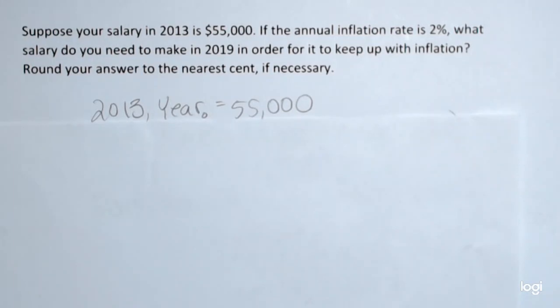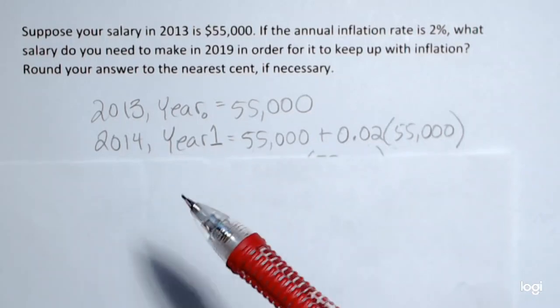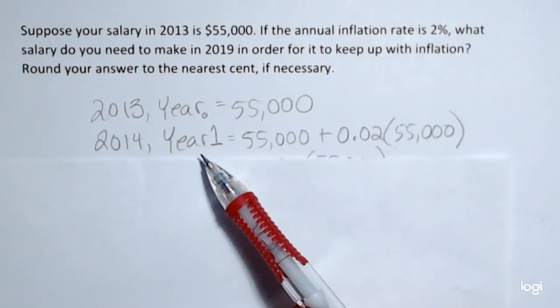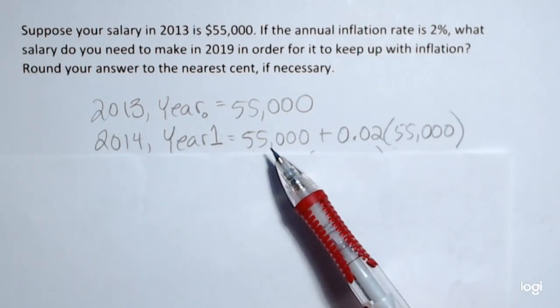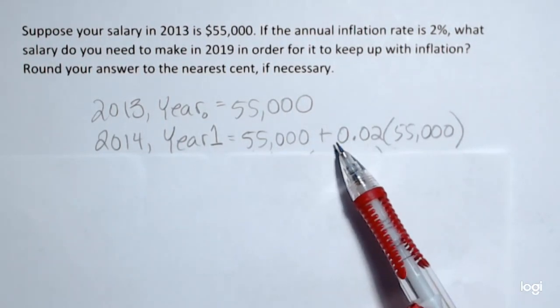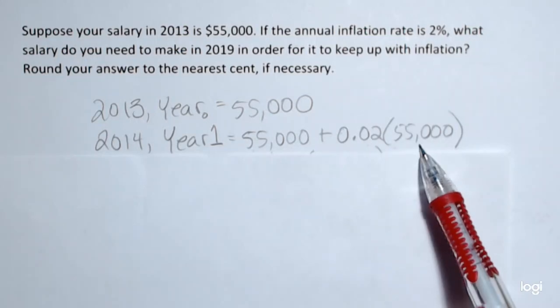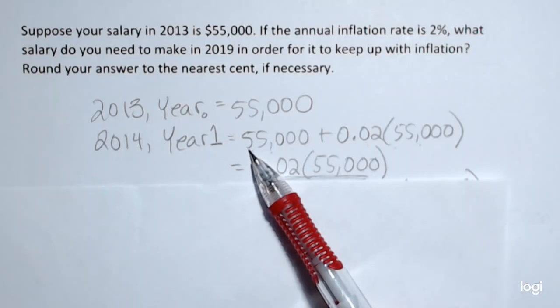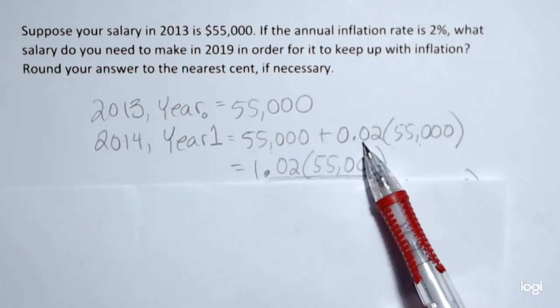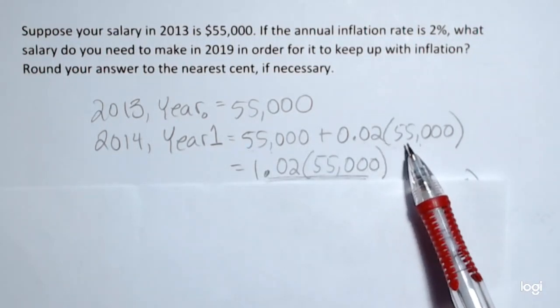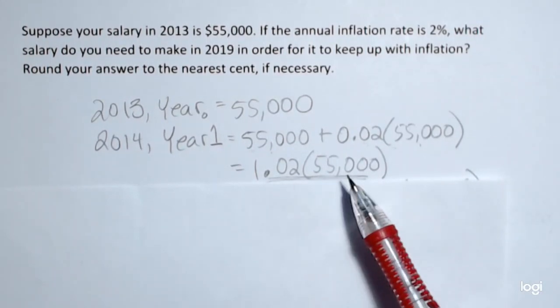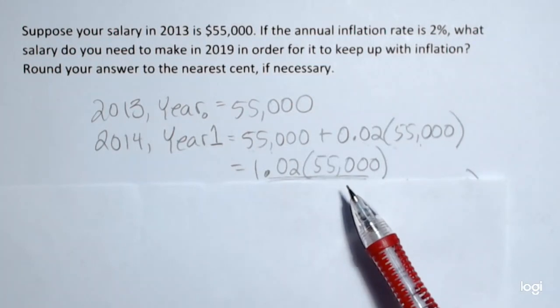For the next year, 2014, the first year after 2013, I'll call that year one. It's going to be the previous year's salary plus 2% of that salary. Simplifying, I have $55,000 plus 0.02 more. You can think of that as combining like terms. I get 1.02 times $55,000.